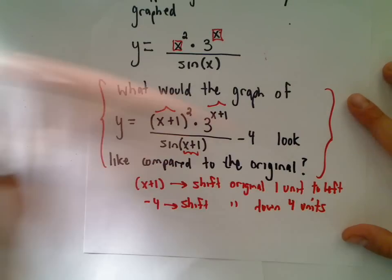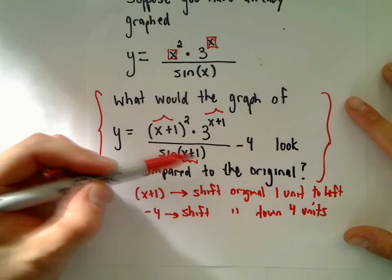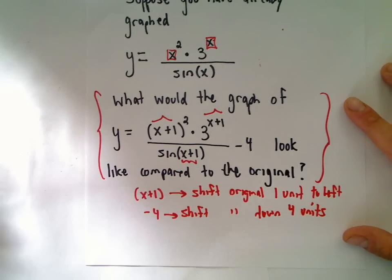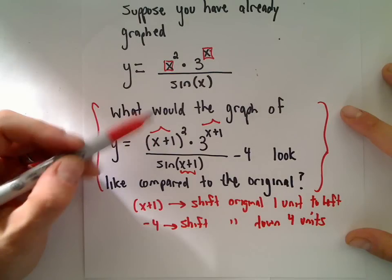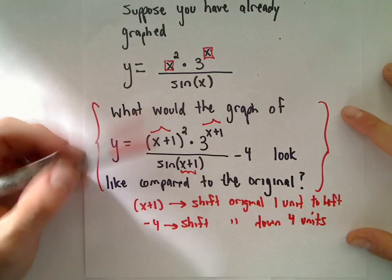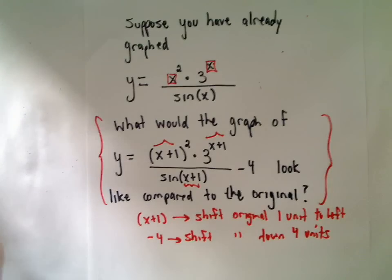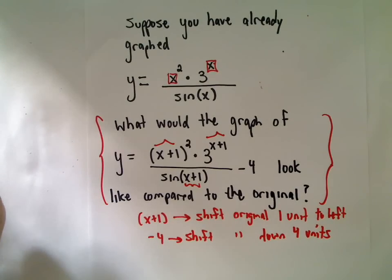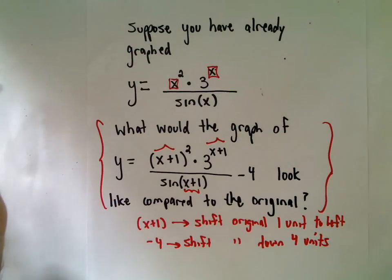You could create this new graph by nudging the original one unit to the left and down 4 units. I'm just trying to get the pattern recognition happening. If you don't know what some basic graphs look like, I have videos out there. If you have any questions, shoot me an email. Good luck out there.